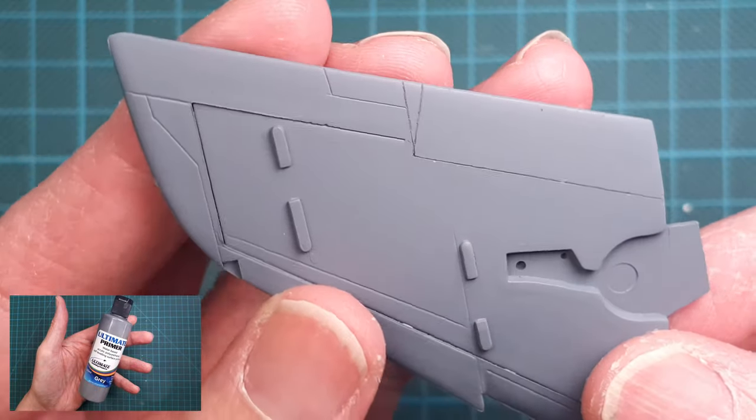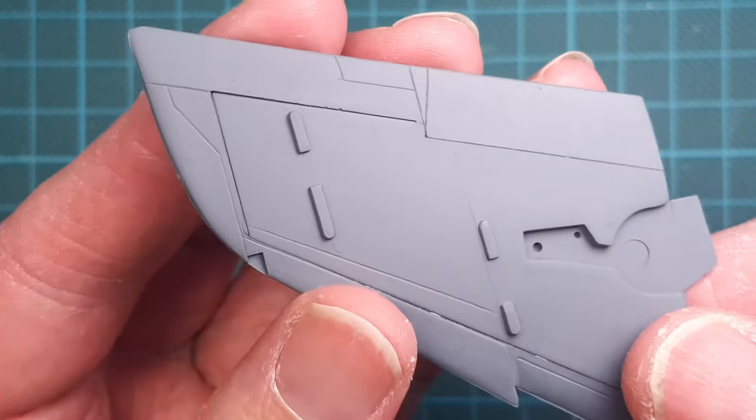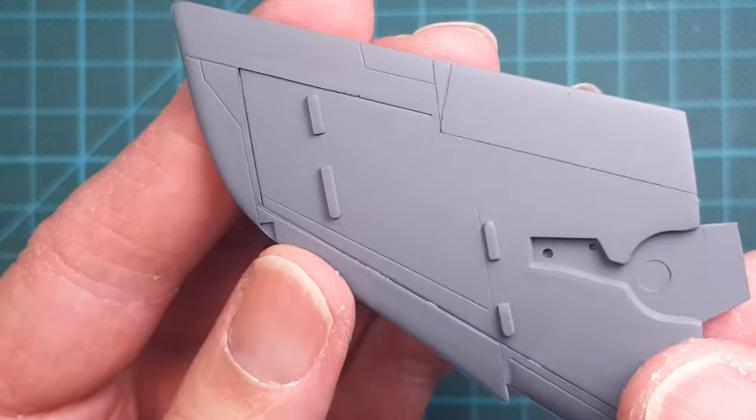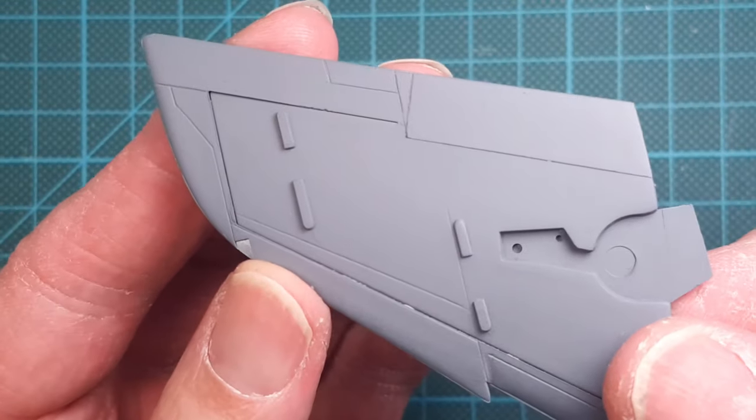So, this is the result after some grey primer. If you compare the two areas on the trailing edge of the wing, you can clearly see the difference.